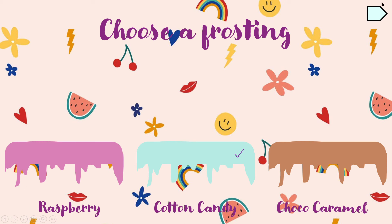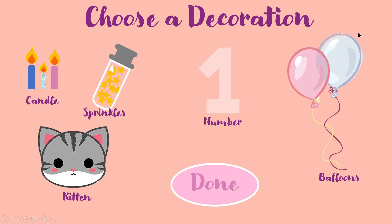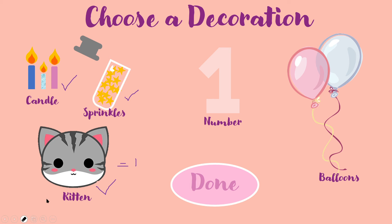Then we have 'Choose a Decoration.' We have sprinkles — let's take that one. And I need candles, sprinkles, a kitten, and balloons.